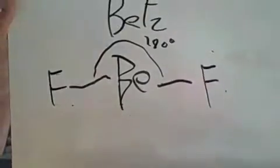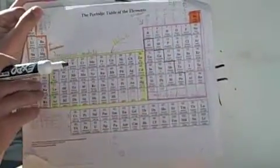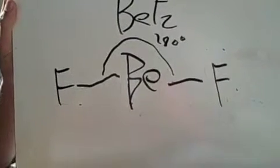For polarity, Be and F are on different sides of the periodic table, with Be on this side and F all the way on this side. We know that their electronegativity is going to be very different. So this molecule has a dipole moment.